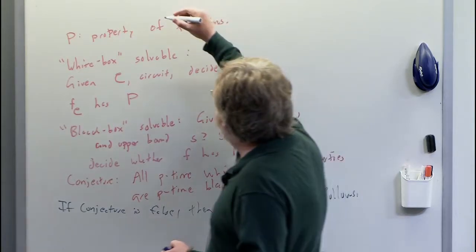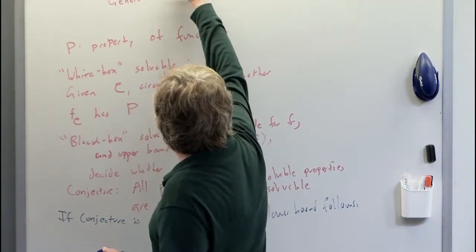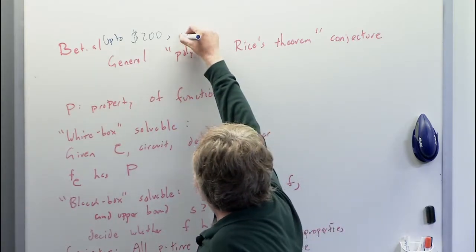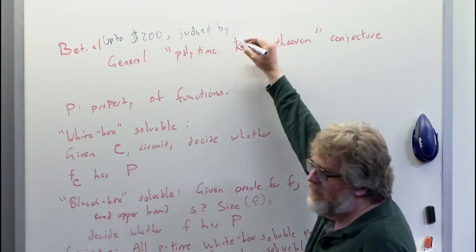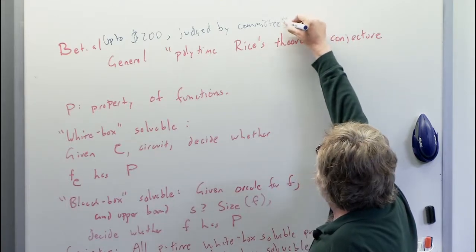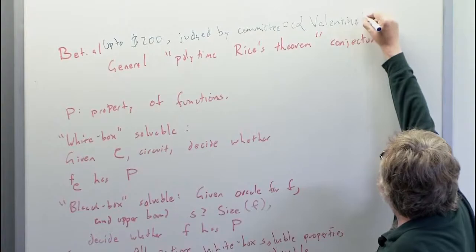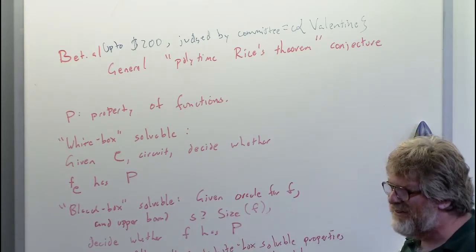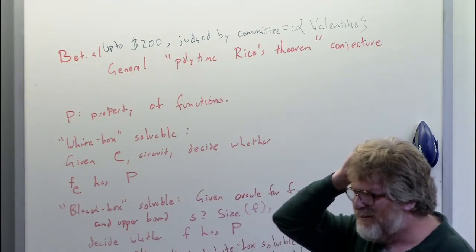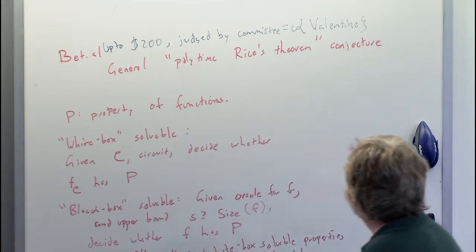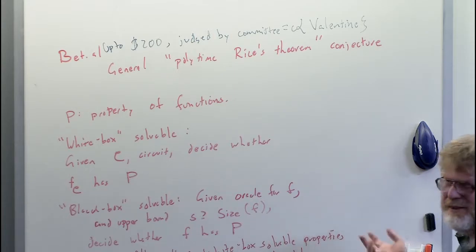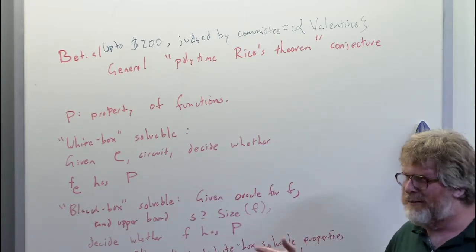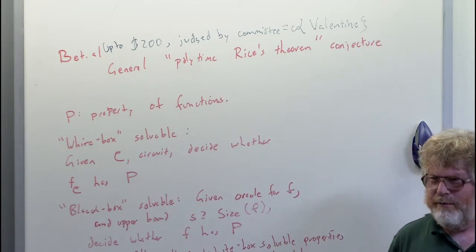I'll offer up to $200 for it, because it's kind of vague. It's going to be judged whether it's worth the full $200 — judged by a committee whose membership is Valentin. The general statement is a little bit vague: some kind of circuit lower bound follows, some kind of lower bound follows. But is the statement of the problem clear?